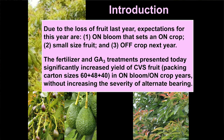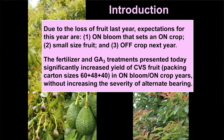Due to the loss of fruit last year as a result of high temperatures, expectations for this year are an on bloom that will set an on crop if the weather continues to cooperate. That will have small size fruit, and next year will be an off-crop year. The fertilizer and gibberellic acid treatments I'm going to talk about today all significantly increased yield of commercially valuable sized fruit — packing carton sizes 60-plus, 48-plus, and 40s — in a good bloom or on-crop year.